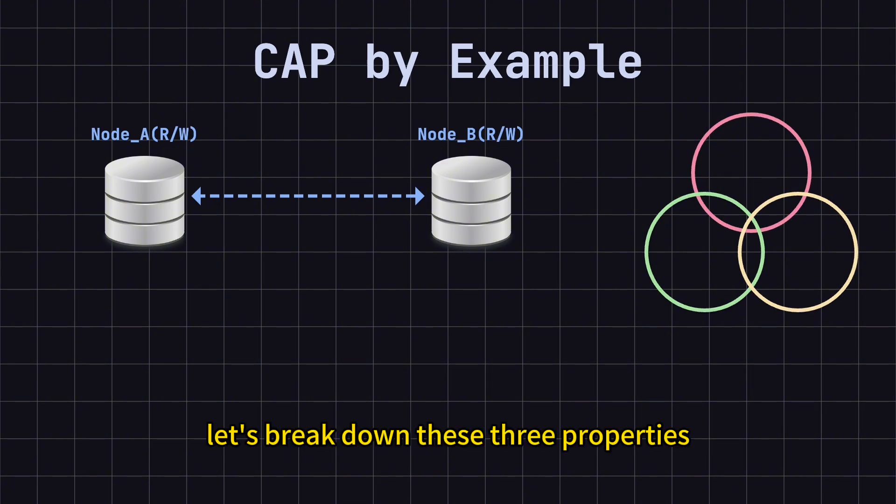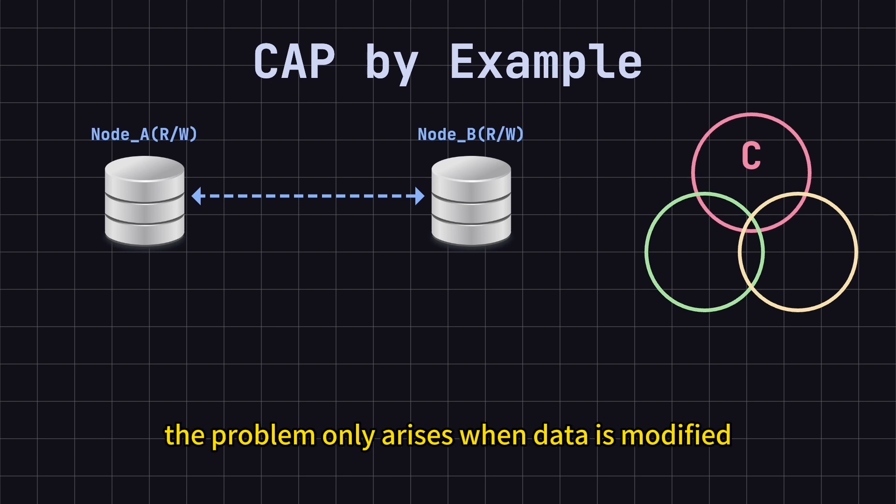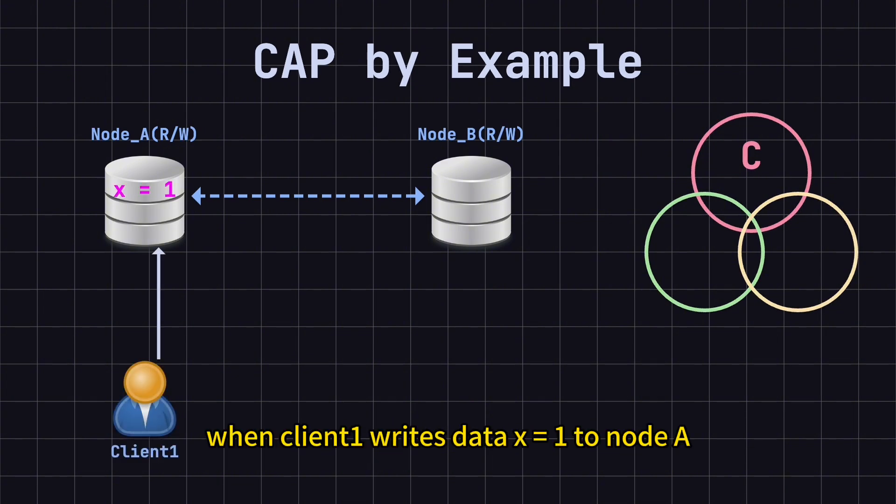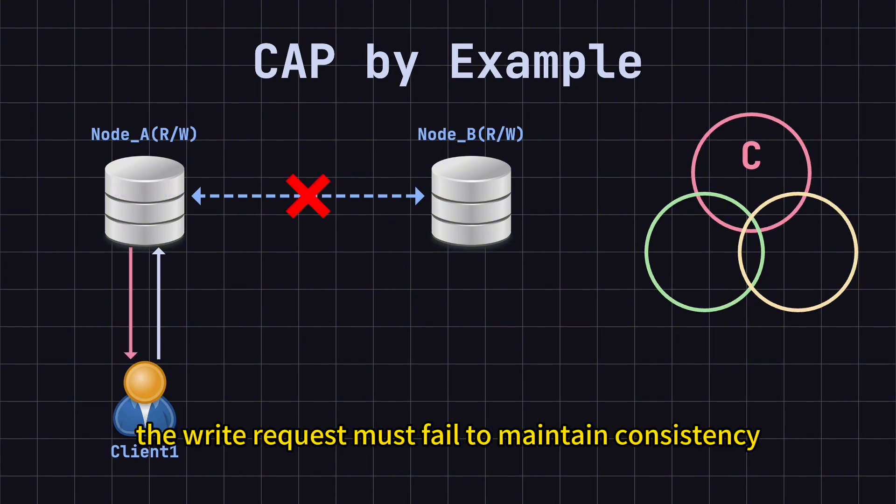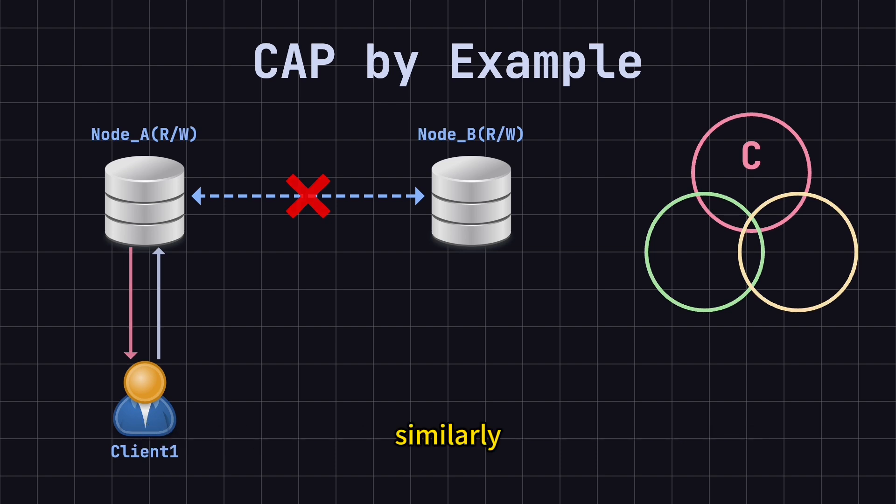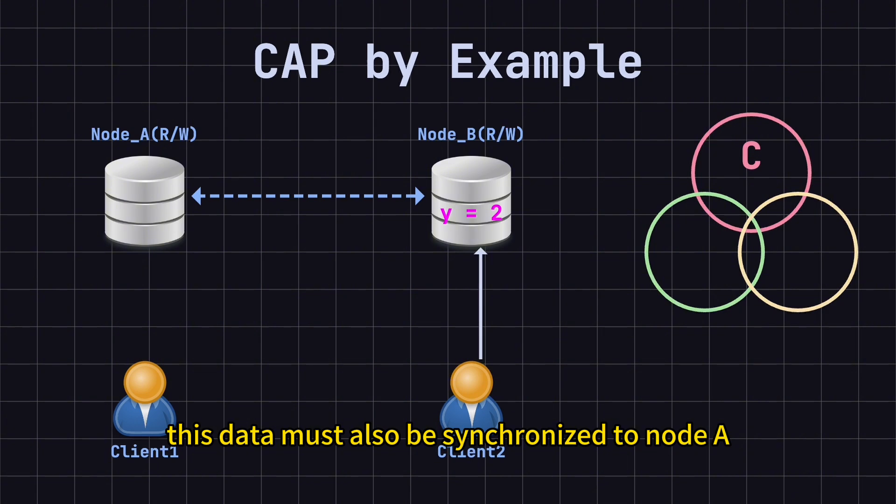Let's break down these three properties. First, Consistency. Consistency means that data on nodes A and B must be the same at any given moment. In a purely read-only system, there's no consistency issue. The problem only arises when data is modified, that is, when data is written. For example, when client 1 writes data x = 1 to node A, this data must be successfully synchronized to node B before the write operation can be considered complete. If synchronization fails, the write request must fail to maintain consistency. Otherwise, the data between the nodes would be inconsistent. Similarly, if client 2 writes data y = 2 to node B, this data must also be synchronized to node A before the operation is considered complete.